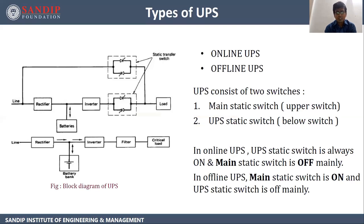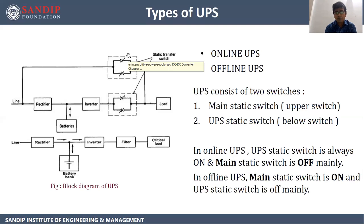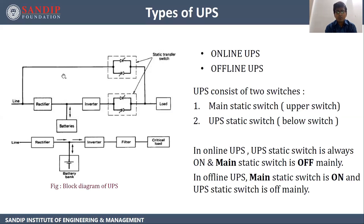Now, how to remember the difference between online and offline UPS through this figure. When we talk about online UPS, power conversion takes place through the UPS path and is fed to the load — so the UPS static switch is mainly on, whereas the main static switch is off. In offline UPS, power is not going through the UPS mainly — most of the time it goes off the UPS, meaning directly the line is fed to the load. That is only possible when the main static switch is on and the UPS static switch is off.